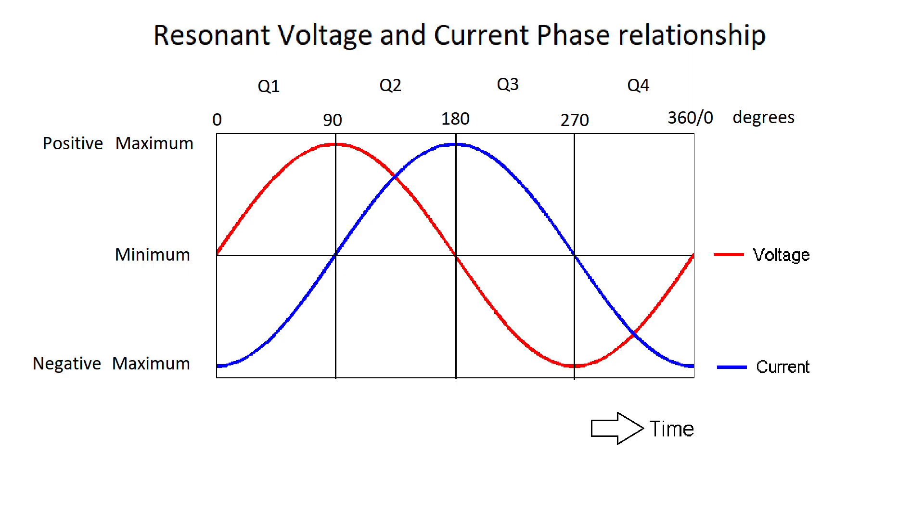In red the resonant voltage sine which represents the dielectric ether field. And in blue the resonant current sine which represents the magnetic ether field strength. As you can see the red voltage and the blue current are 90 degrees out of phase. When the voltage is maximum the current is minimum and vice versa. The magnetic current and the dielectric voltage are constantly transforming into each other.